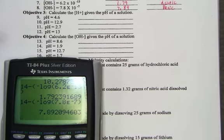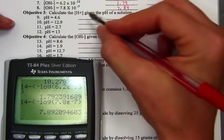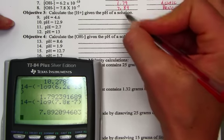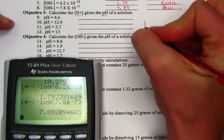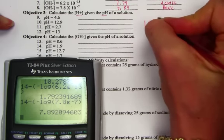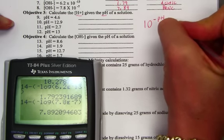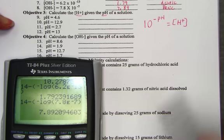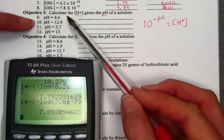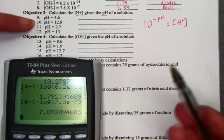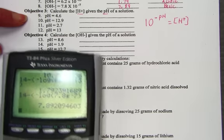Our third objective has us calculating the hydrogen ion concentration from a pH. I notice this is a direct match. This problem has us use 10 to the negative pH to find the hydrogen ion. If I'm asked to pull out the concentration from a pH, we use the base of 10 and raise it to the negative pH value.